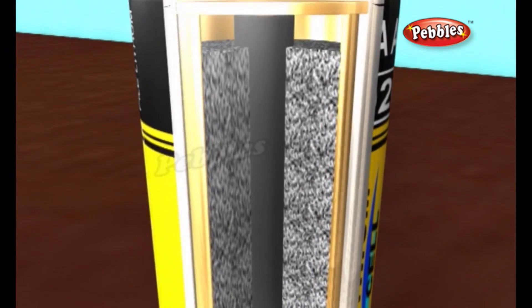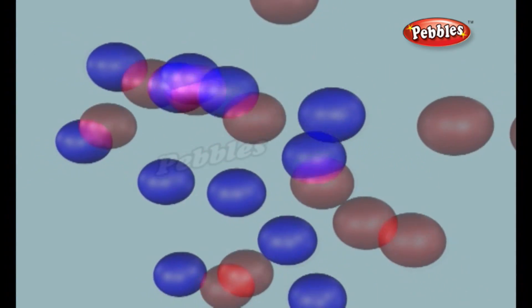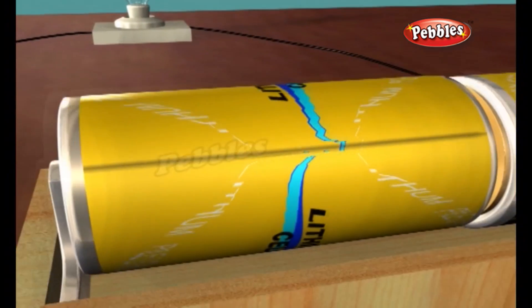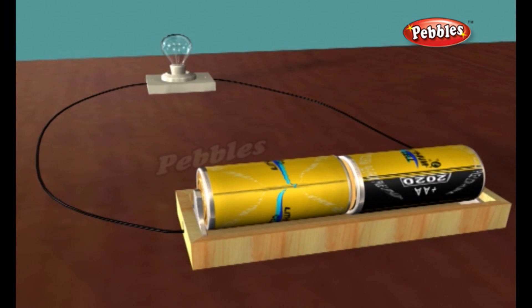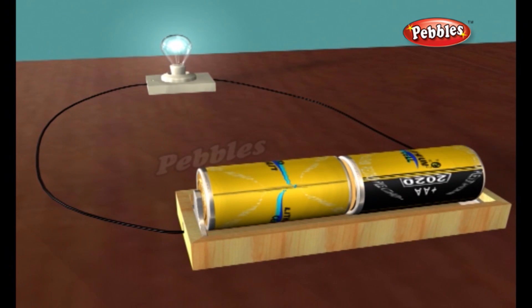Electricity is the flow of electrons through a circuit or conductive path like a wire. The cathode and anode are hooked up to an electrical circuit. The chemical reaction in the battery causes a buildup of electrons at the anode. This results in an electrical difference between the anode and the cathode.